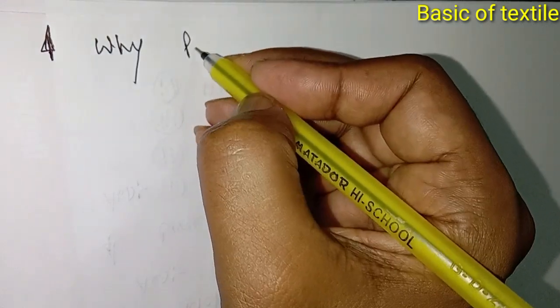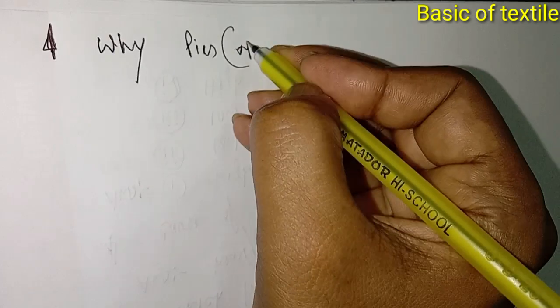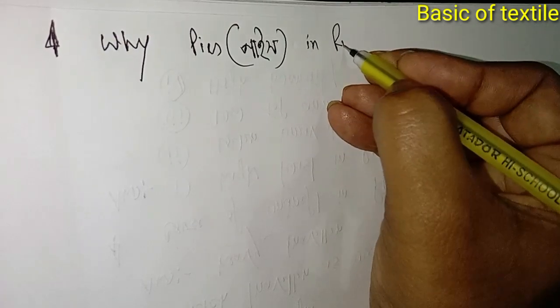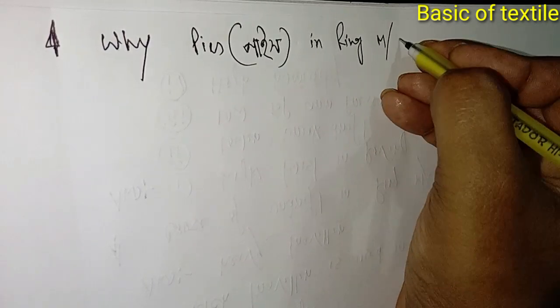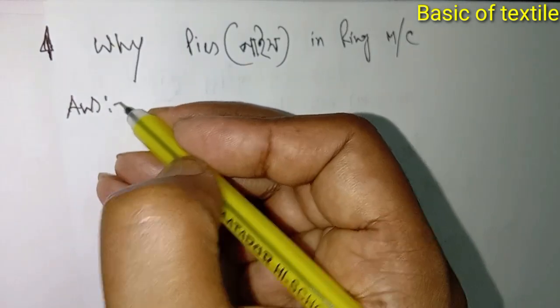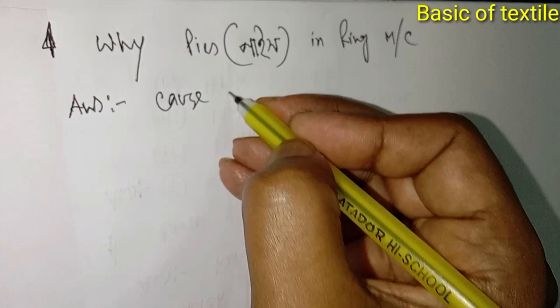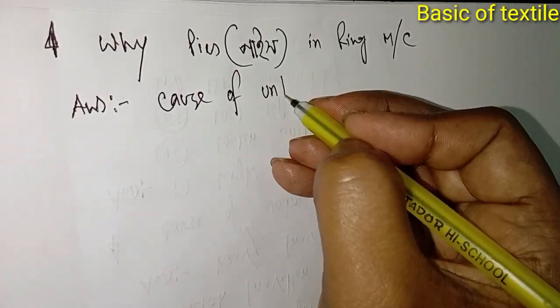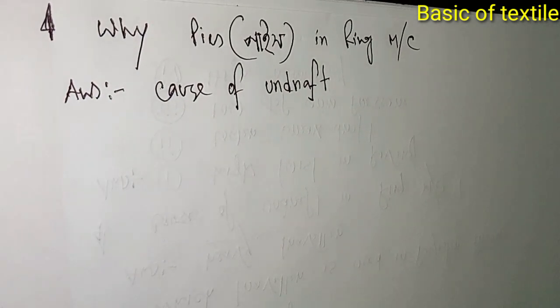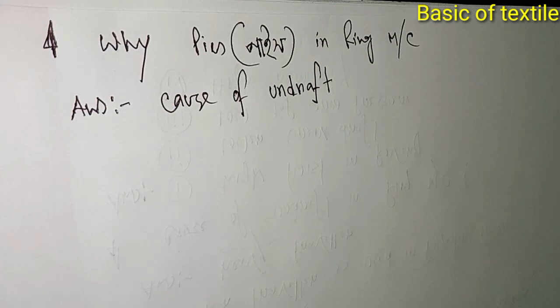The final question is about price in ring machine and causes of undraft. These factors relate to production costs and quality. Understanding these causes helps prevent undraft issues and maintain proper yarn production.